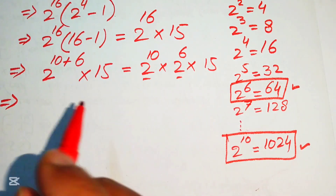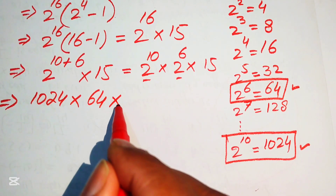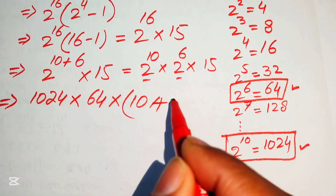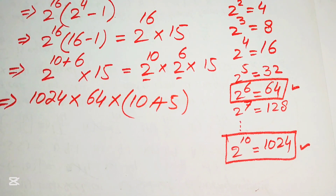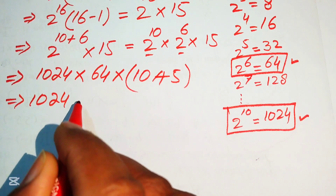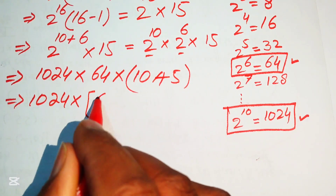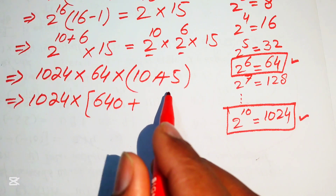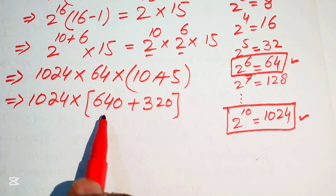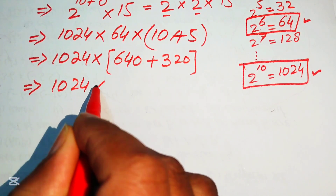Substituting these values, we have 1024 multiplied by 64 multiplied by 15. We rewrite 15 as 10 plus 5, then multiply 64 by both terms: 64 times 10 equals 640, and 64 times 5 equals 320. Adding these gives 1024 multiplied by 960.